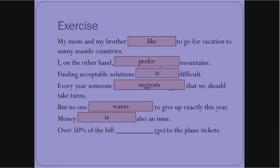Over 50% of the bill goes to the plane tickets. Here we are talking about the money. It's not several bills, it's one bill, and a portion of it - 50% of it - goes to the plane tickets. It requires a singular verb.